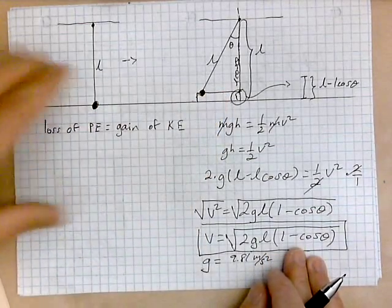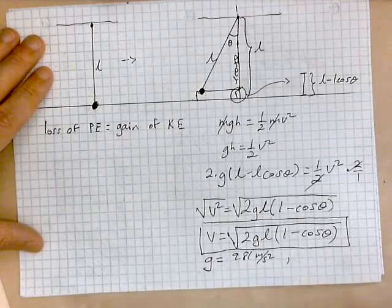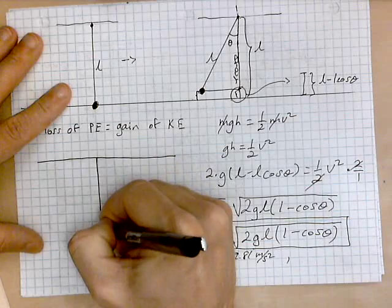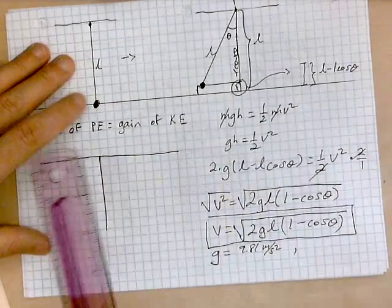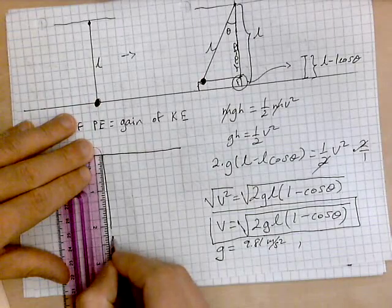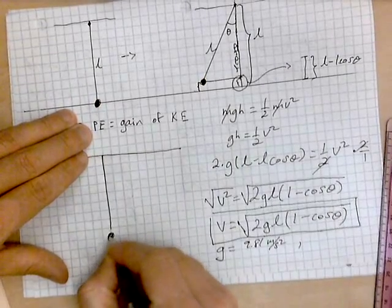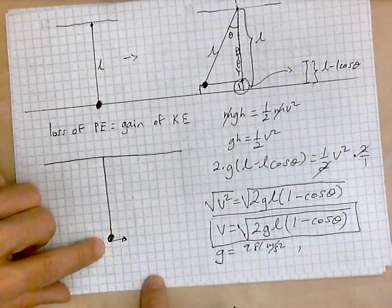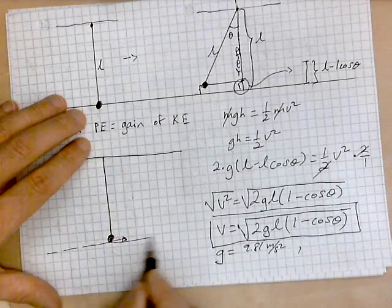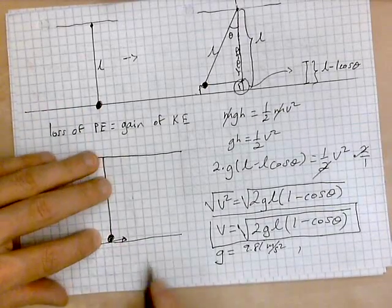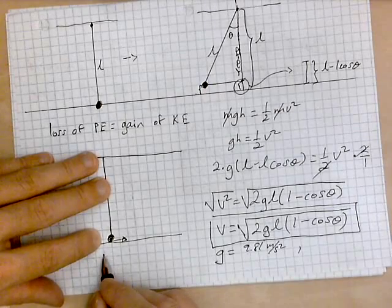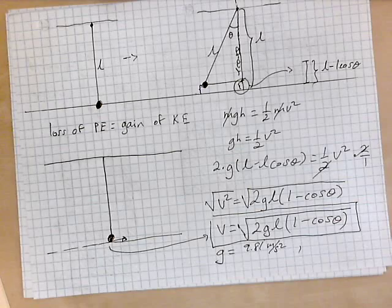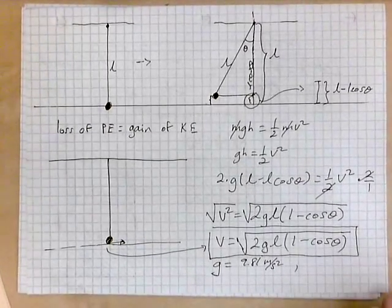You might want to draw a third picture in the sequence, one that has motion to it. We imagine the bob is actually moving in this direction past the equilibrium position. The velocity of the bob at this instant is given by v equals the square root of 2gl(1 minus cosine theta). Thank you for watching.